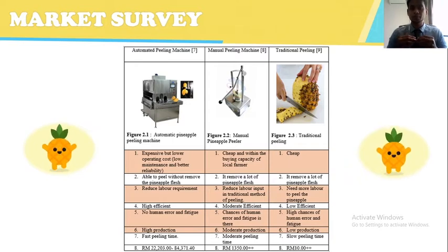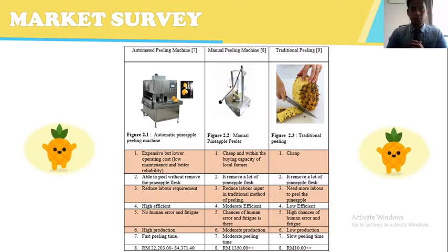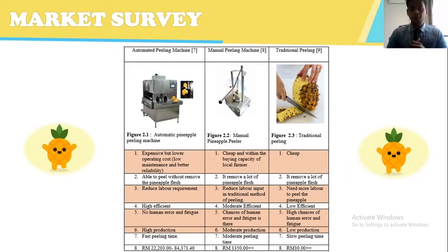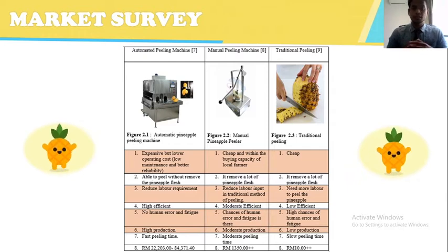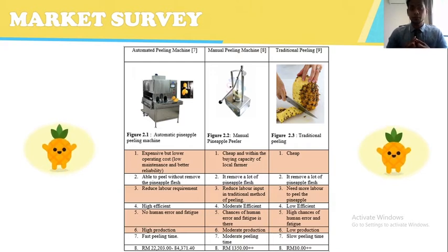We will make a comparison in terms of four key points. In terms of cost, the automated peeling machine is expensive, the manual peeling machine is affordable, and the traditional peeling machine is cheap. In terms of labor requirement, the automated peeling machine has reduced labor requirement, the manual peeling machine also has reduced labor compared to the traditional peeling machine, which requires more labor.